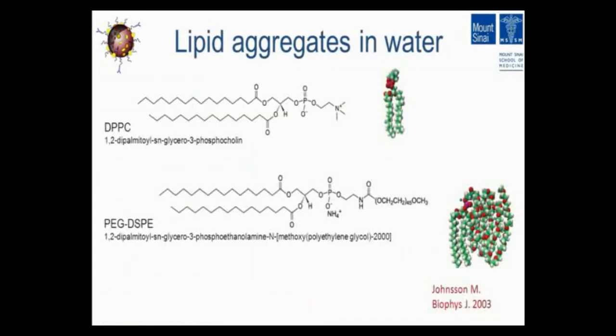So how can you exploit this? Here's a very nice example of two very similar-looking molecules that are actually very different. You see ordinary phospholipid DPPC with C16 saturated tails and a hydrophilic head group, and then PEG-DSPE, which is used a lot in liposome technology. This molecule has a hydrophilic polyethylene glycol polymer — the PEG unit repeated 45 times — so the hydrophilic part is massive compared to the hydrophobic part.